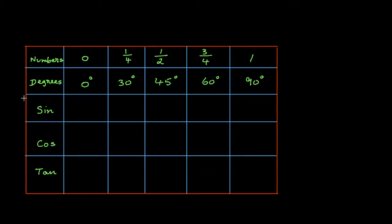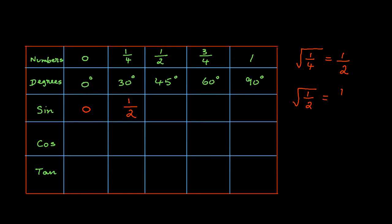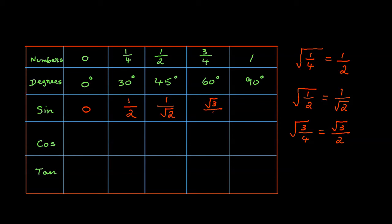Now you have everything set up. We are going to start finding the values for sine. All you have to do is just take the square root of the number. For sine 0 degrees, you take the square root of 0, which is just 0. For sine 30 degrees, you take the square root of 1/4, which is 1/2. For sine 45 degrees, you take the square root of 1/2, which is 1 over square root of 2. For sine 60 degrees, you take the square root of 3/4, which is square root of 3 over 2. And for sine 90 degrees, you take the square root of 1, which is just 1.